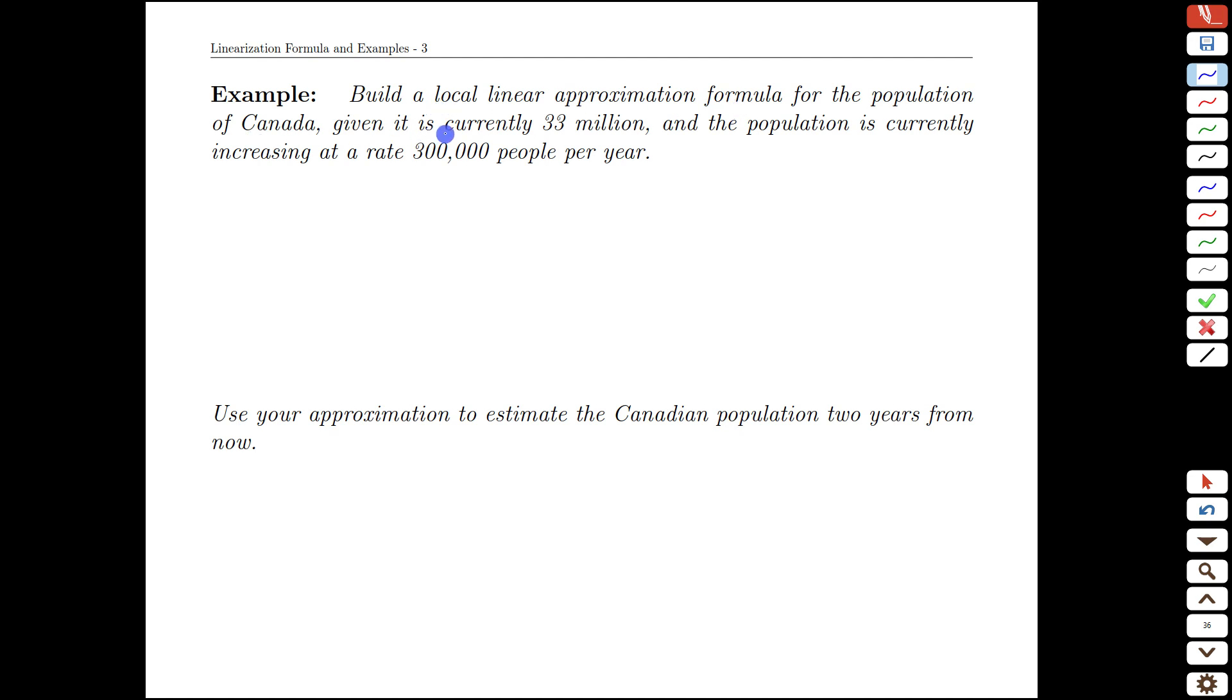Let's use that in an example, looking at the population of Canada, currently around 33 million, and increasing at a rate of 300,000 people per year. Let's add some interpretation to that, where we say now is t equals zero. This 33 million would be the population now. And this rate would be p prime of zero. So the value is 33 million. The slope is 300,000 people per year.